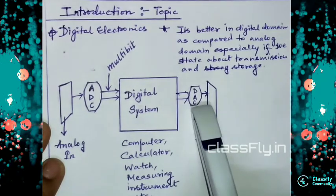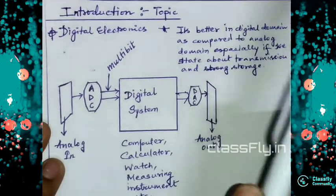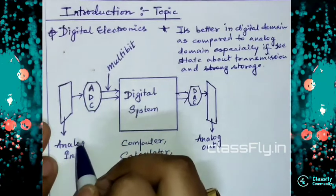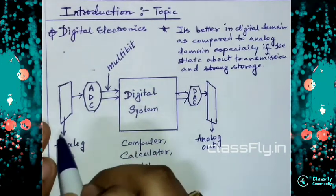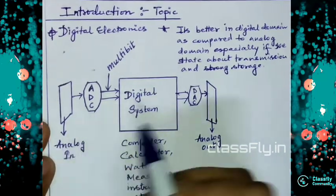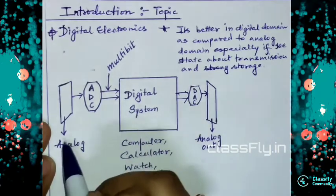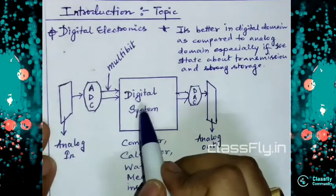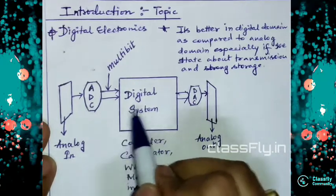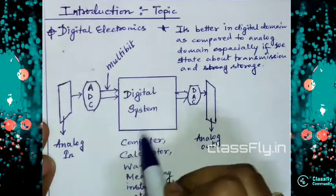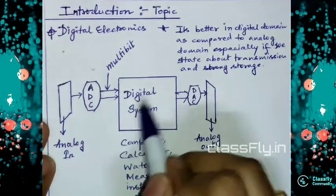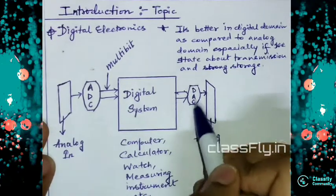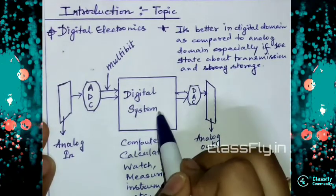The ADC acts as a language converter from the analog part to the digital. If the input is given as analog, the digital system will have a digital input so it can process it. For getting the output as analog, we have the DAC, which converts the digital signal into the analog output.